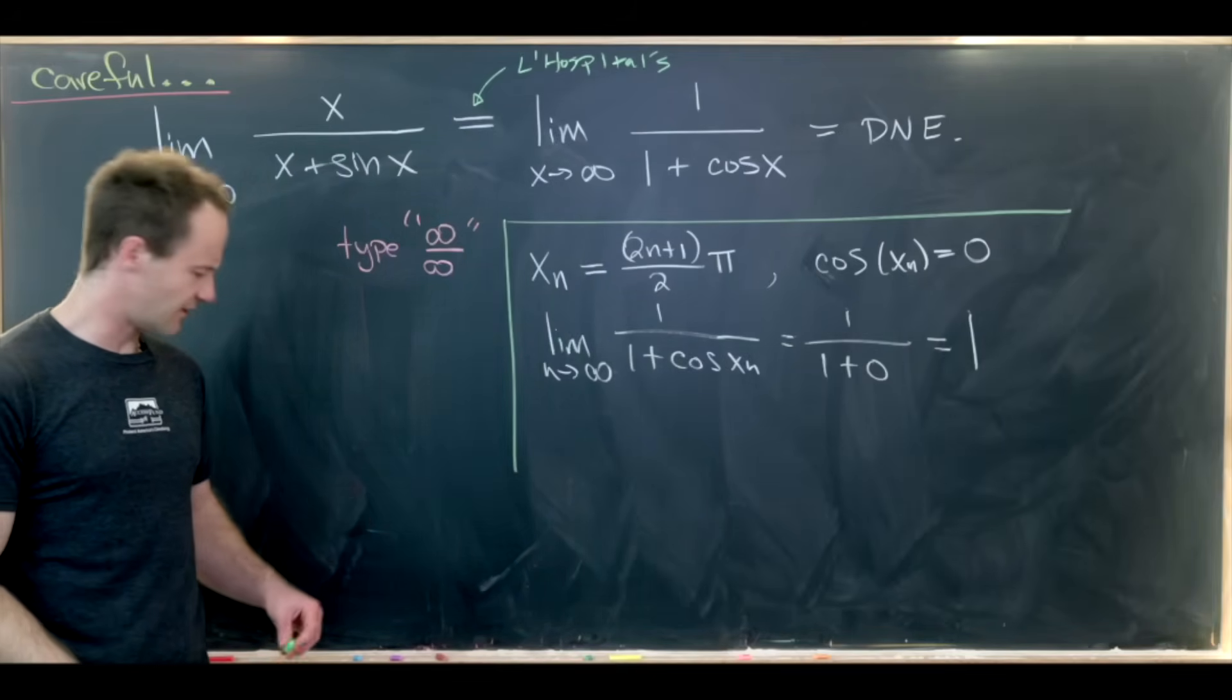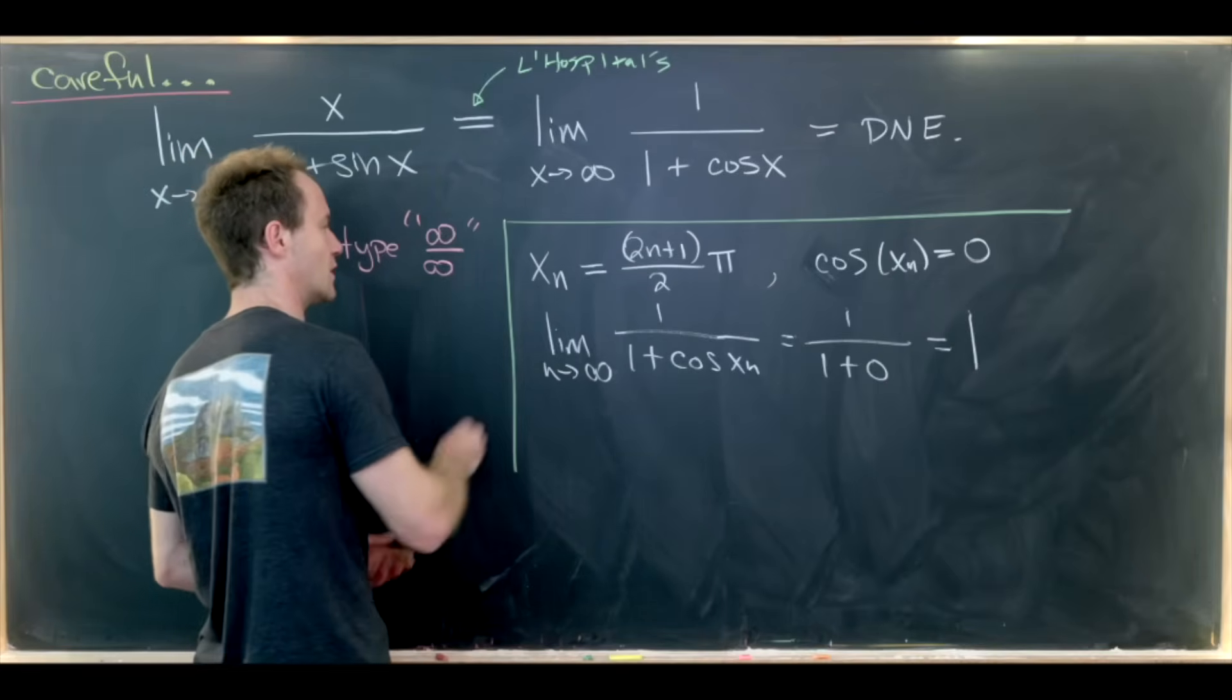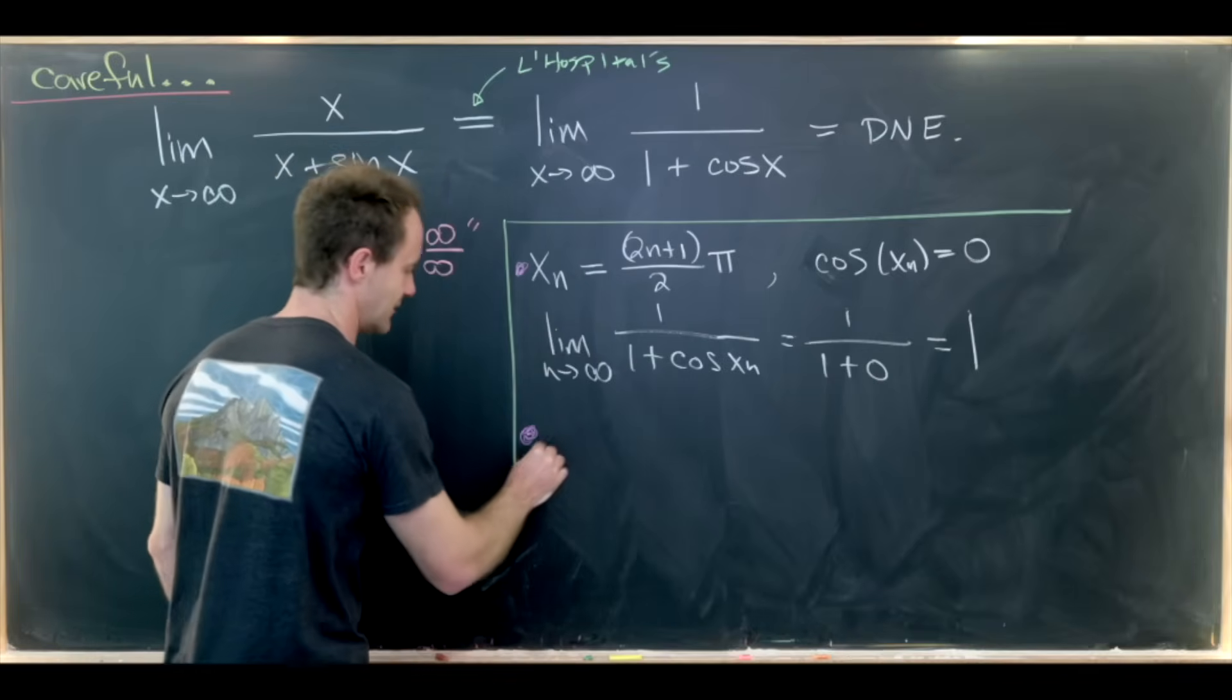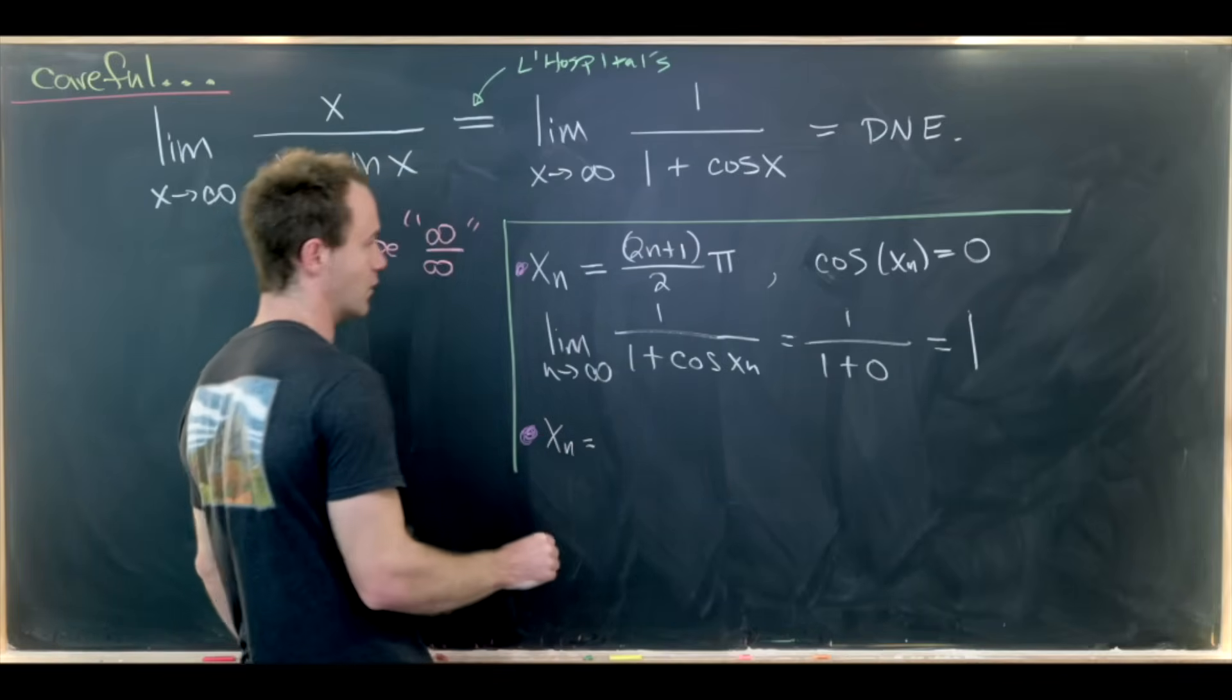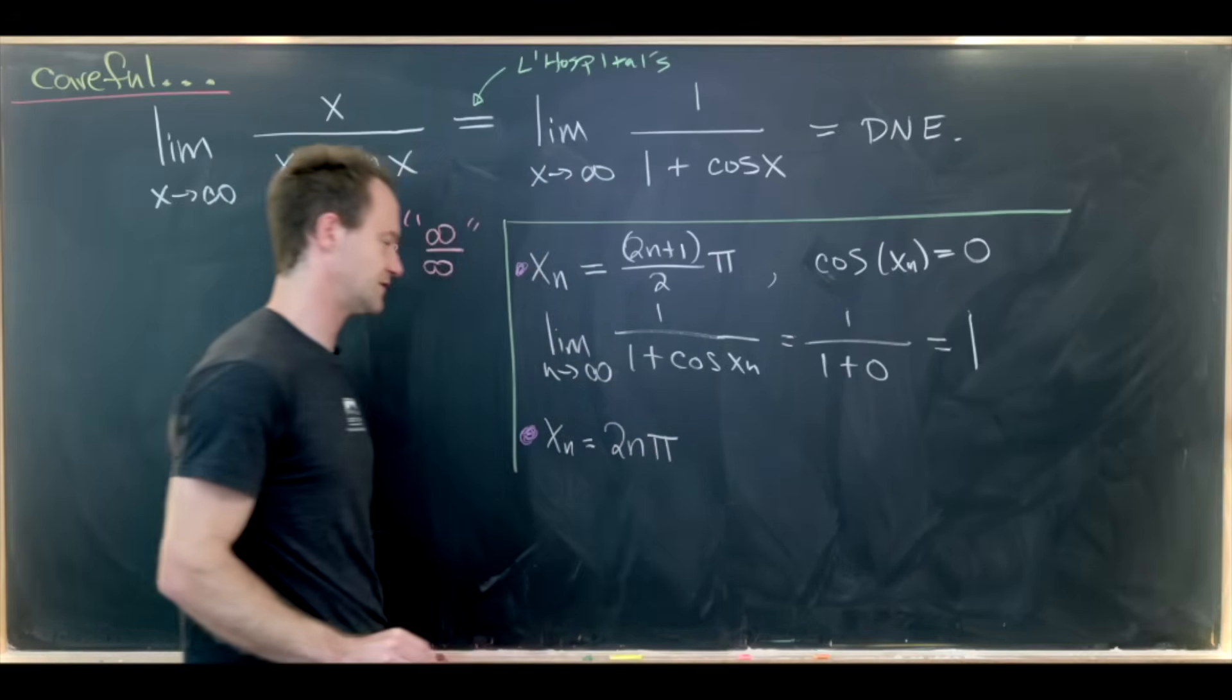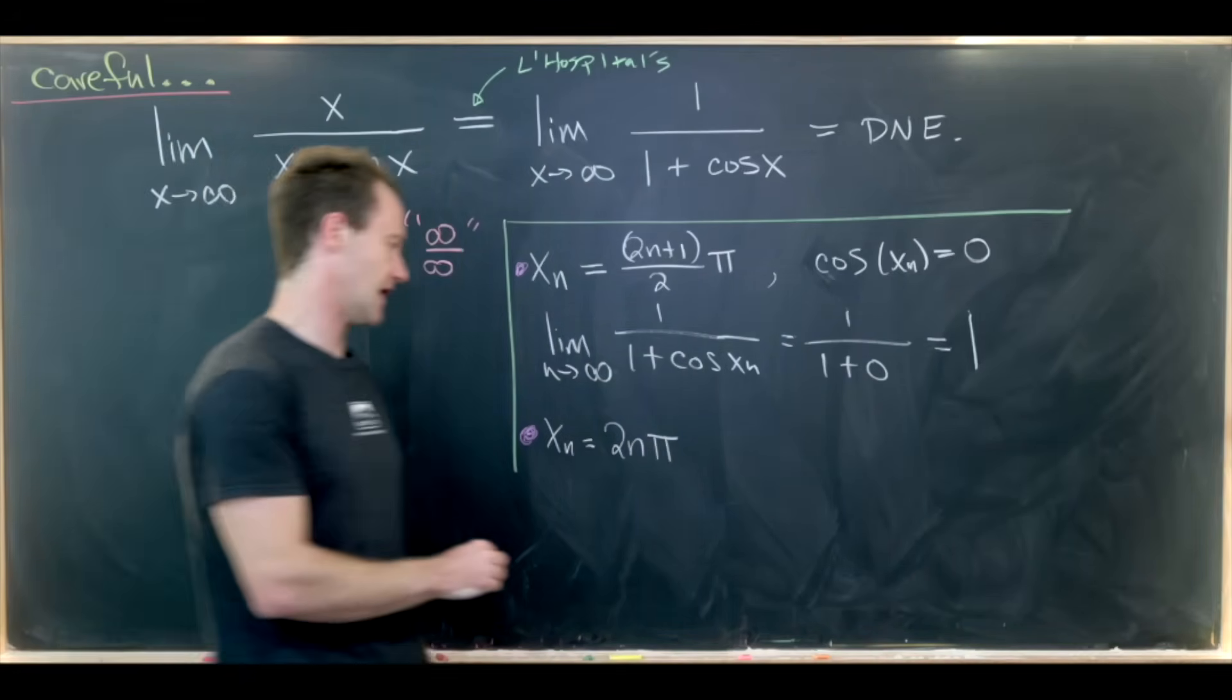Now let's compare that to a different sequential limit and I'll use the same notation here. That sequential limit will be xn equals 2n times pi. So it's going to be all even multiples of pi.